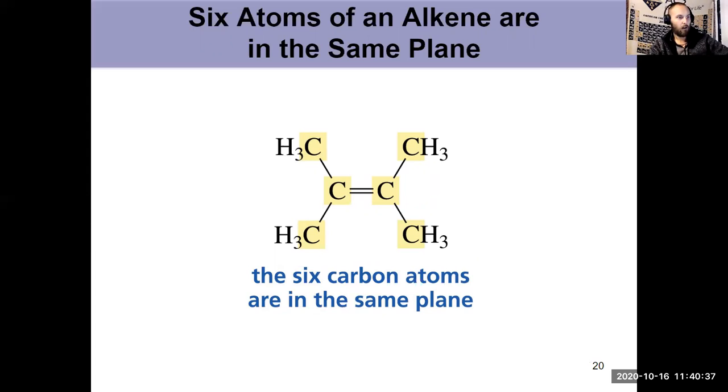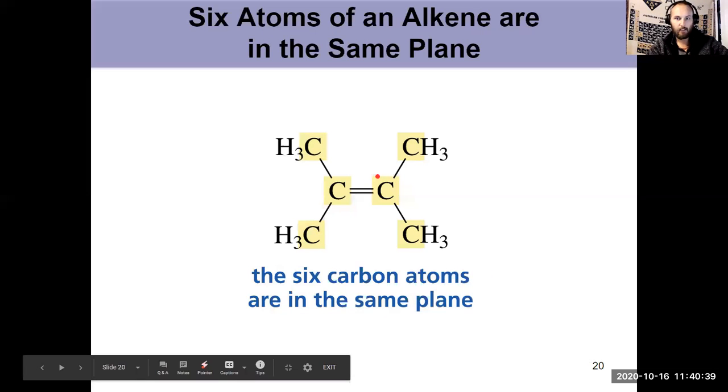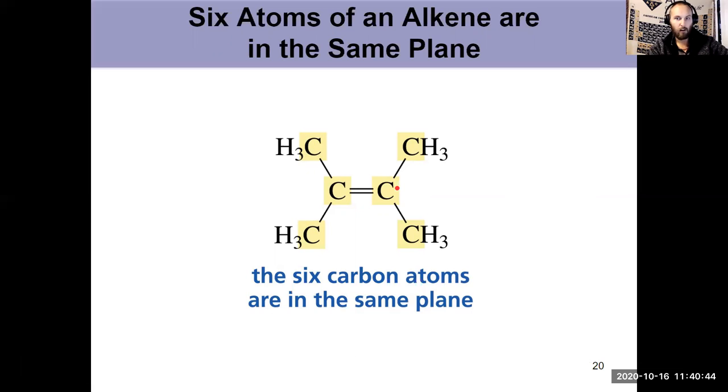All of those carbons that are highlighted, so each of the sp2 carbons plus the methyl groups that are bonded to them, they're all in the same plane. Those points are defining a plane. And to get the maximum orbital overlap, that P orbital must be completely perpendicular to that plane. And that's important to keep the geometry of those six carbons in mind as we discuss the reactivity of these things moving forward.